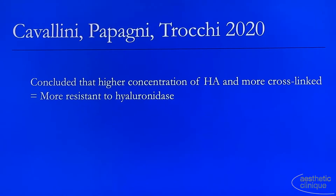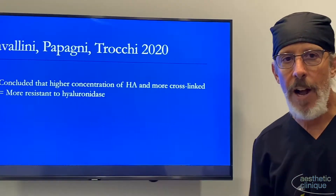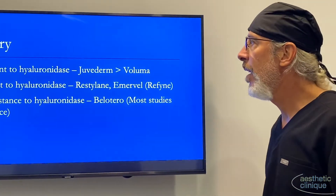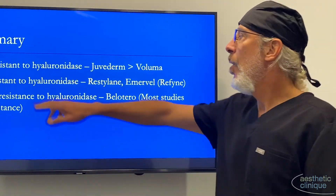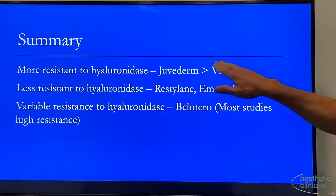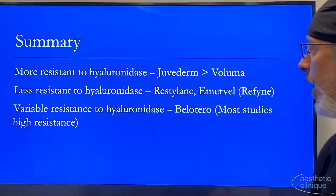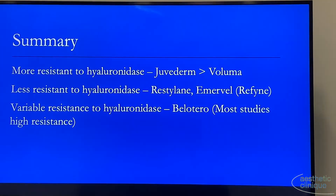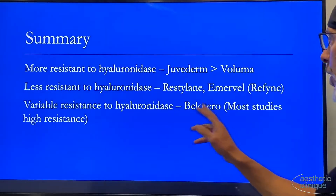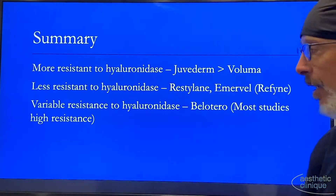We're seeing a consistent theme: more concentration and higher cross-links are more resistant. In summary — more resistant to hyaluronidase: Juvederm over Voluma. Less resistant: Restylane and Emmerville. Variable resistance: Belotero, but most studies say it has high resistance.